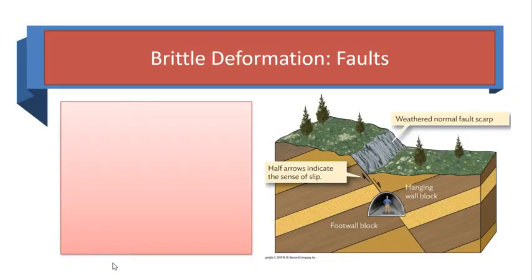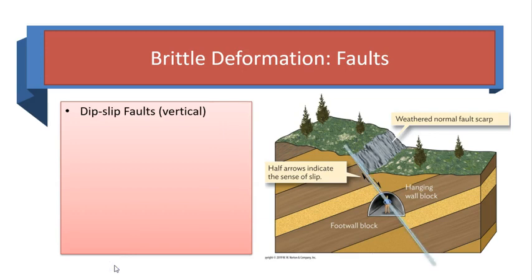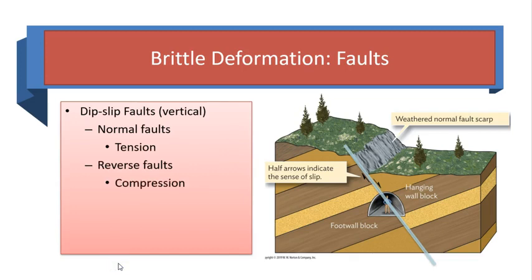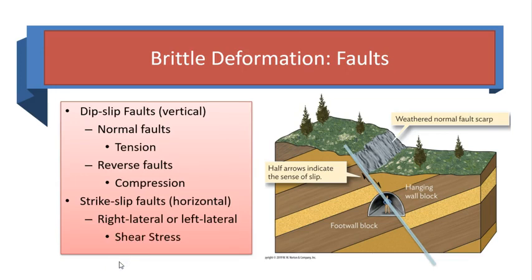Brittle deformation makes faults and can be caused by any type of stress. There are two categories of faults: dip-slip and strike-slip. Dip-slip faults, also called vertical faults, are those where rock slides up or down along the dip of the fault surface. Normal faults are caused by tensional stress, while reverse faults are the result of compression. Strike-slip faults are either right lateral or left lateral, and both are caused by shear stress.